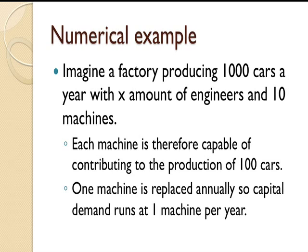This is the sort of thing that you get examined on in economics courses, and you should be able to replicate them for multiple choice or short answers. Imagine a factory producing 1,000 cars a year with X amount of engineers and 10 machines. The quantity of labourers is assumed to be fixed. Each machine is therefore capable of contributing to the production of 100 cars — 1,000 divided by 10 is 100. One machine is to be replaced annually, so capital demand runs at one machine per year, replacing the one that's been depreciated and can no longer produce cars.